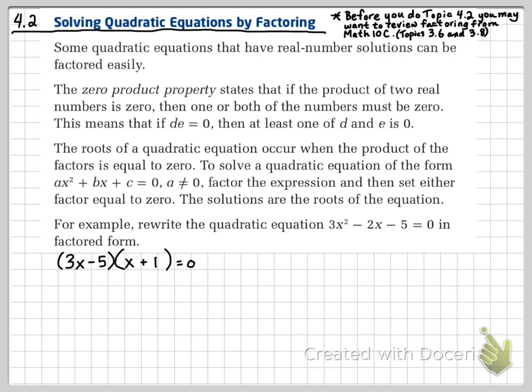For example, if we rewrite the quadratic equation 3x² - 2x - 5 = 0 in factored form, which we can do by simply using the decomposition method, we can rewrite that equation as (3x - 5)(x + 1) = 0.